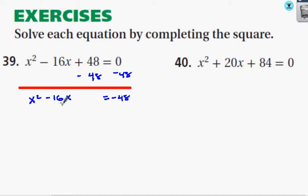I'm going to take the negative 16, which is my B. I'm going to multiply it by half, find out half of it, which gives me negative 8. And then I'm going to square that answer, which gives me 64.